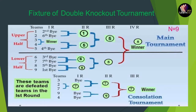Let's take an example of a fixture for a double knockout tournament. Here there are 9 teams, which is an odd number. The total number of matches is 9 minus 1, which gives 8 matches. We divide into upper half and lower half: the formula for upper half is (N+1)/2 and for lower half it is (N-1)/2, giving 5 teams in the upper half and 4 in the lower half. For bias, the nearest power of 2 for 9 is 16, so 16 minus 9 gives 7 byes.